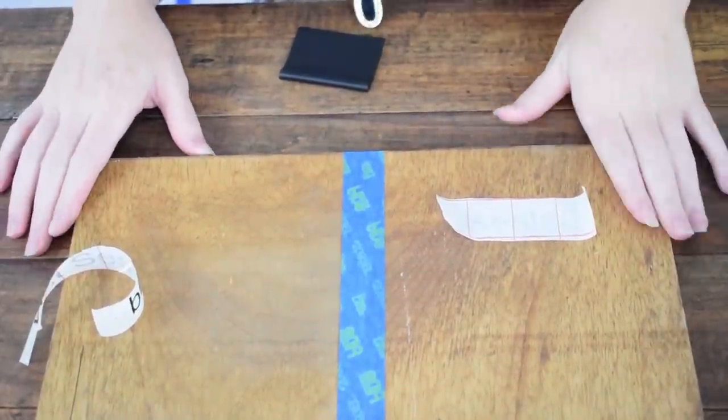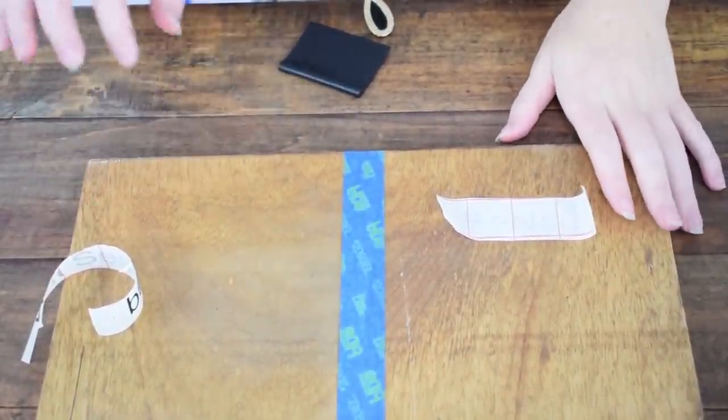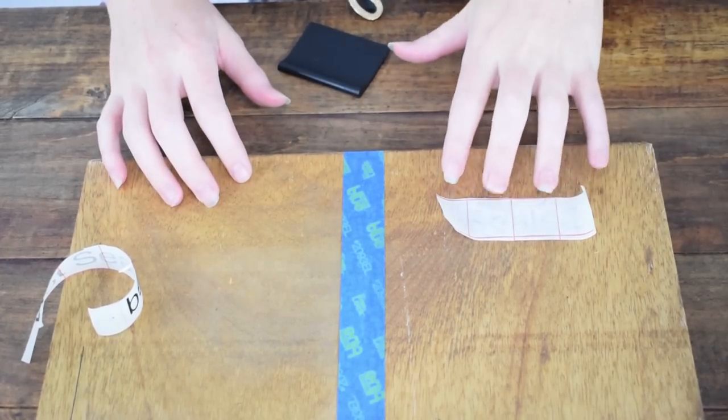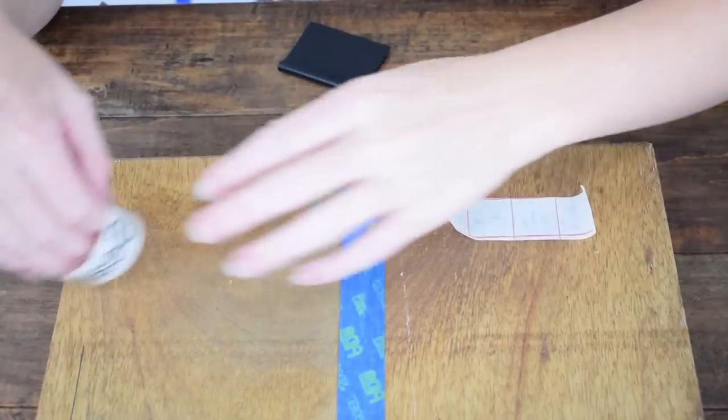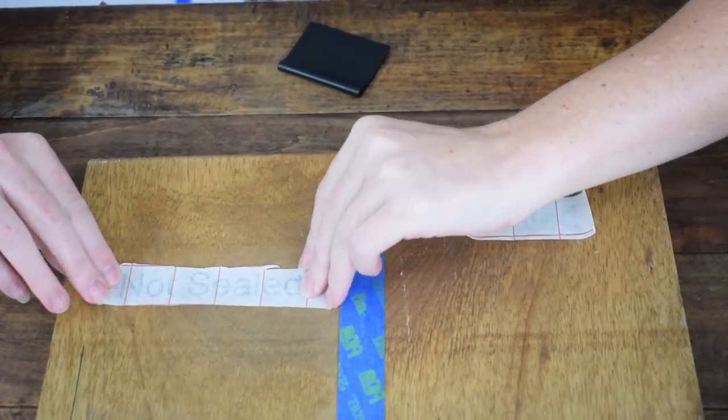Hi guys. Just to give you a close-up view of what I was talking about with the vinyl designs not sticking to the stained wood, but sticking to the wood with the polyacrylic on it, I've cut a couple of really quick vinyl designs, and I'm just going to show you the difference between the two.